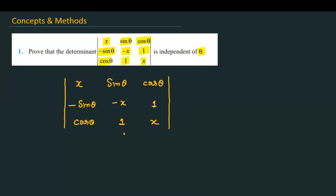You have a determinant given and you have to prove that when you simplify it, the expression you get will be independent of theta. It means theta will not appear in your final result — it doesn't matter what value of theta you substitute; the output will not depend on theta. The rows are labeled R1, R2, R3 and the columns C1, C2, C3.